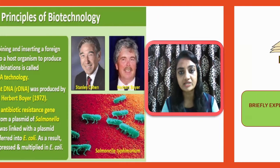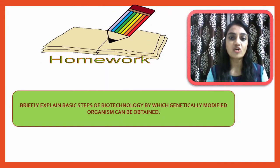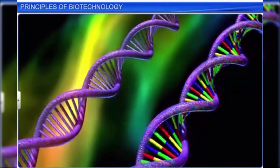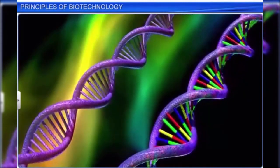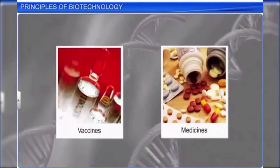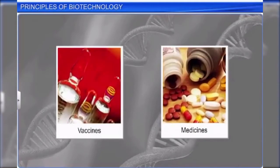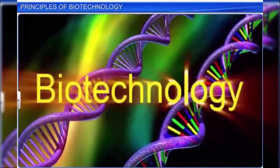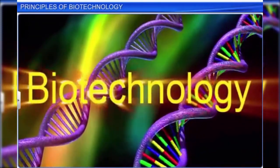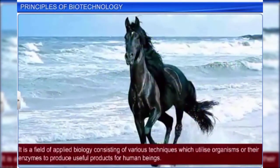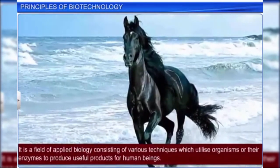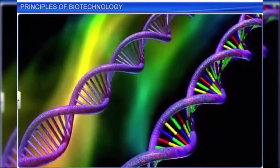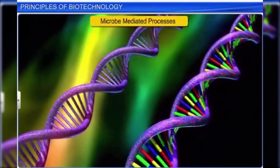This is your homework for today's lecture. Now let me summarize all topics using an animation video. With new emerging technologies, the world today is brimming with possibilities — we are equipped to make vaccines, medicines, and counter diseases that can cause epidemics. It is also possible to grow crops which are disease and drought resistant. The science which makes all this possible is called biotechnology — a field of applied biology utilizing organisms or their enzymes to produce useful products.